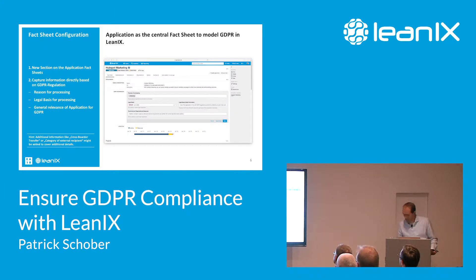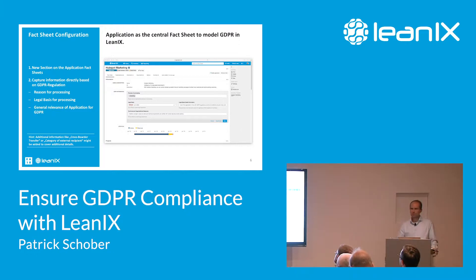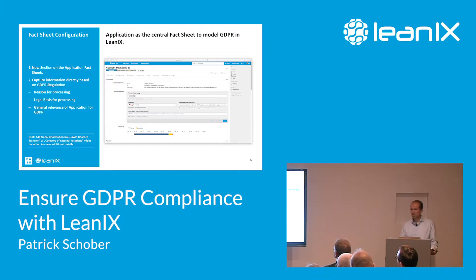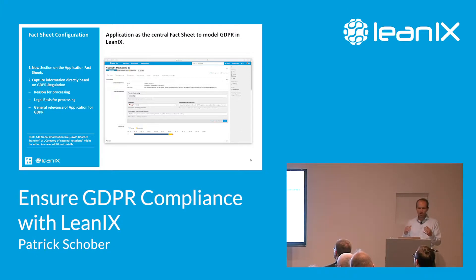Right here we have a view of the modified application fact sheet, where we used the configuration add-on to add a new section. It covers the 'reason for processing,' which is a new multi-select field that we can easily configure with a drop-down list for all the general reasons also asked for in the regulation — for example, processing for marketing reasons, recruiting reasons, and so on — giving you a general categorization.